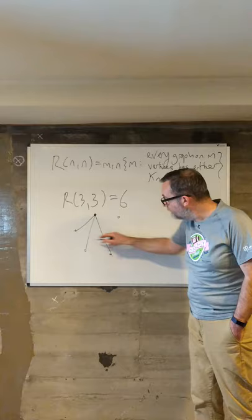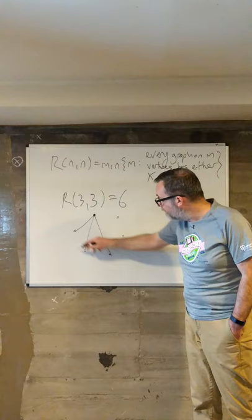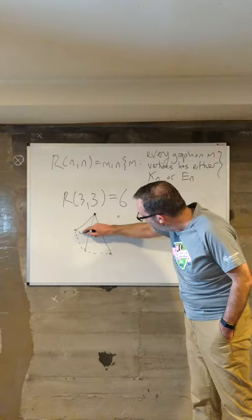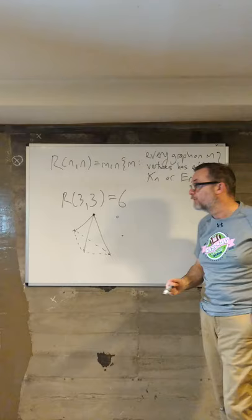And now if any two of these guys are neighborly, then we have three people who form a triangle. And if no two of these are neighborly, then we automatically have three people here who don't form a triangle, who form an independent set of size three.